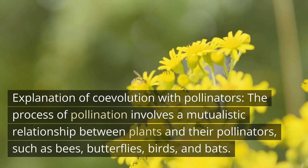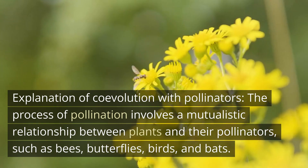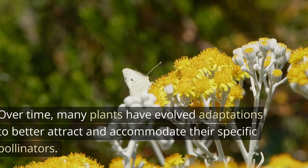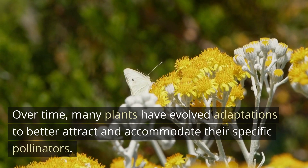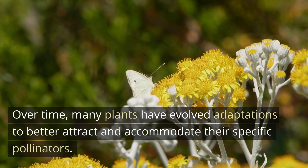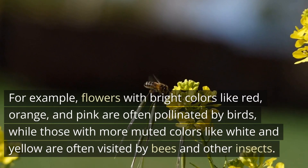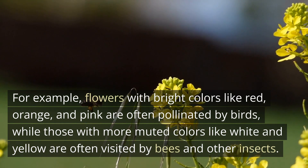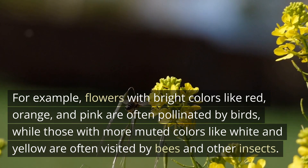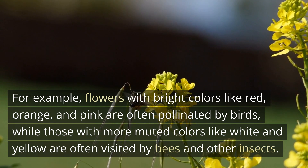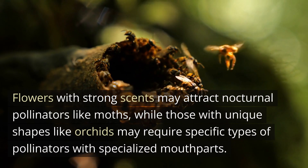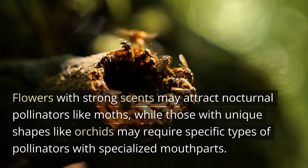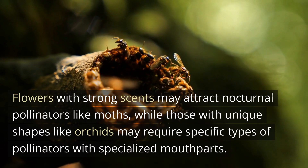The process of pollination involves a mutualistic relationship between plants and their pollinators, such as bees, butterflies, birds, and bats. Over time, many plants have evolved adaptations to better attract and accommodate their specific pollinators. For example, flowers with bright colors like red, orange, and pink are often pollinated by birds, while those with more muted colors like white and yellow are often visited by bees and other insects. Flowers with strong scents may attract nocturnal pollinators like moths, while those with unique shapes like orchids may require specific types of pollinators with specialized mouthparts.